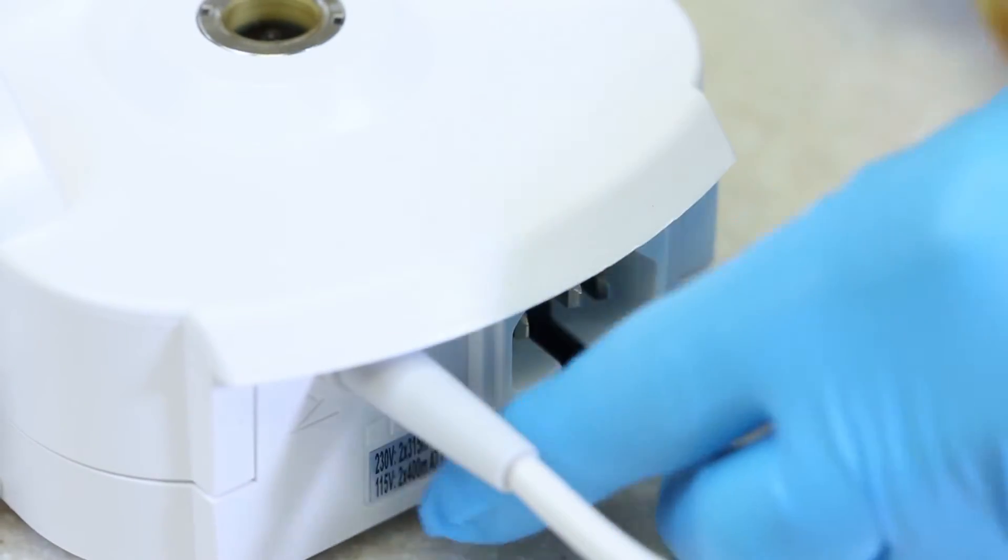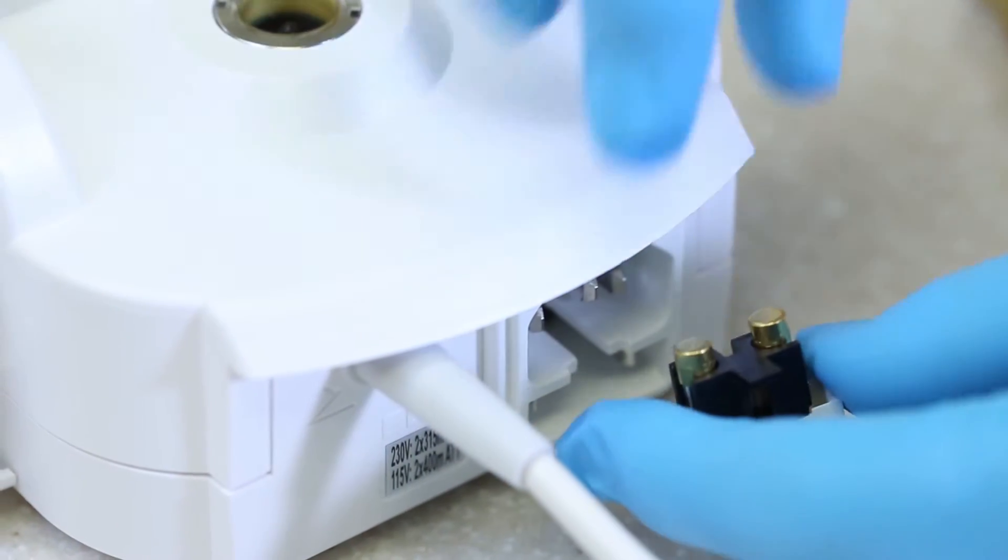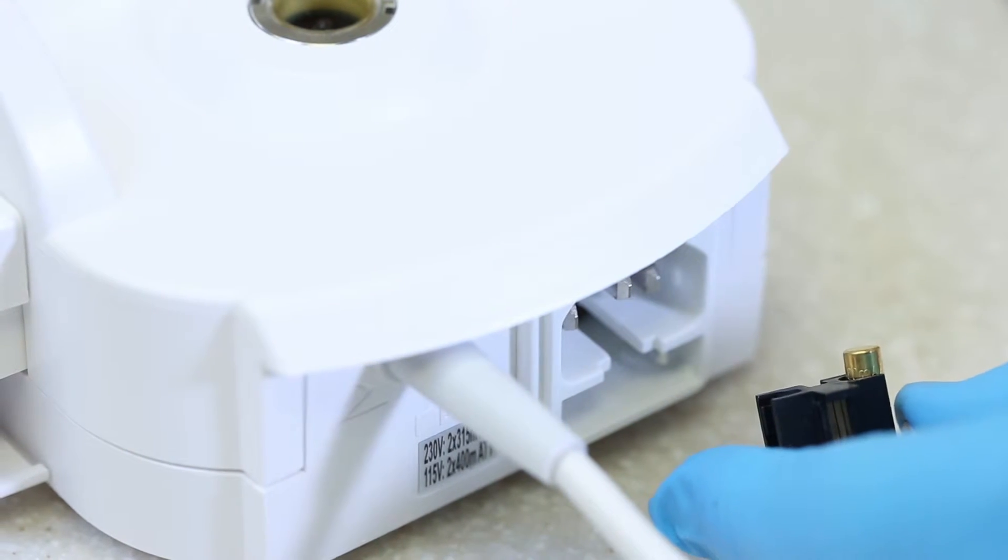To release the fuse holder, using a small flat head screwdriver, push down and out on the plastic clip. This will release the fuse holder.